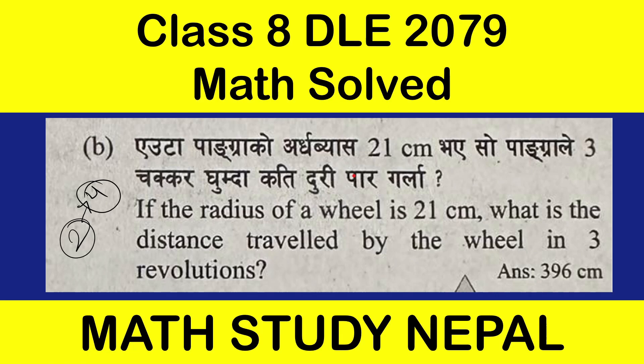If the radius of a wheel is 21 cm, what is the distance travelled by the wheel in three revolutions? This is the question.